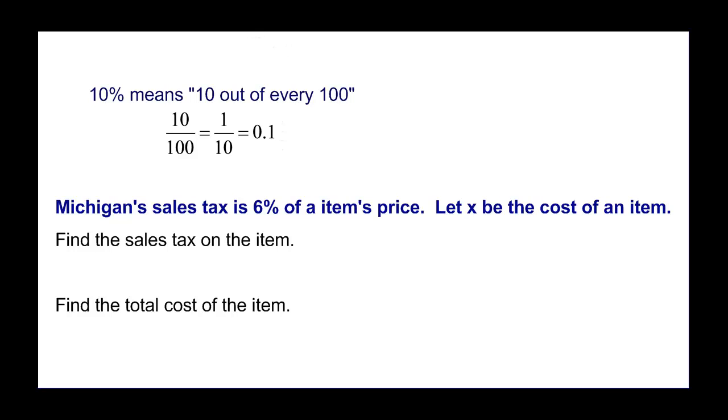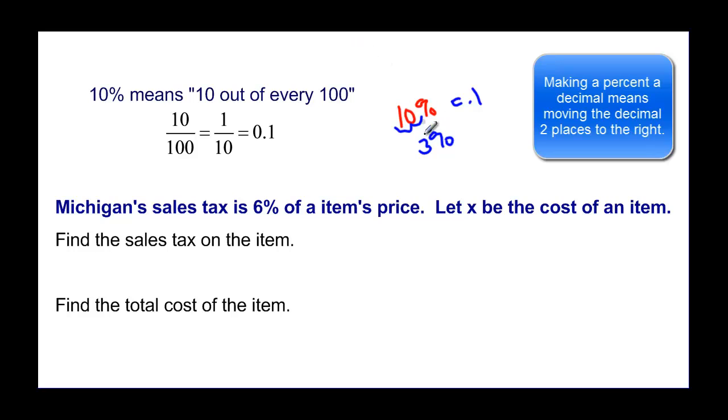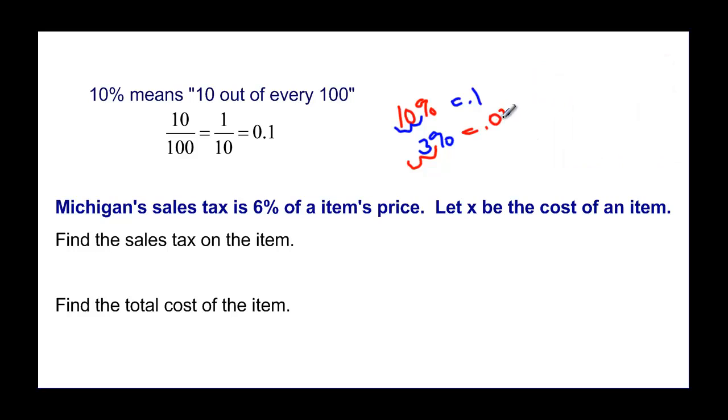If you look at 10 and you want to think about the decimal, 10% would be move the decimal two places to the right, and it's equal to 0.1. If I have 3%, I'm going to move the decimal two places to the right, 1, 2, and I'm going to have 0.03.